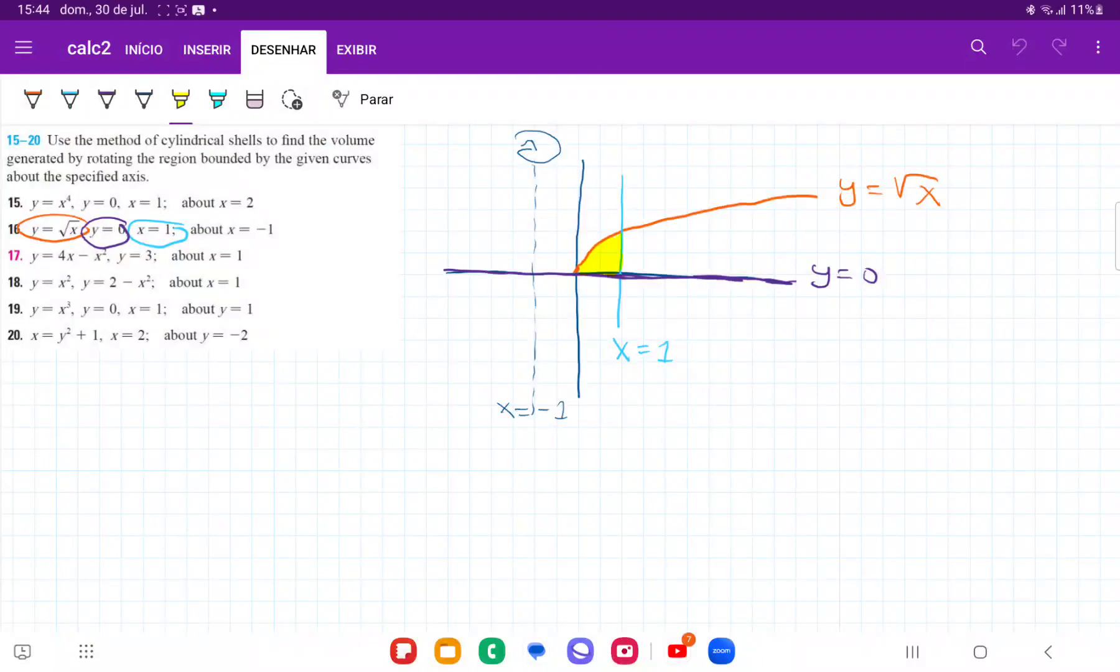From 16, we're taking the area bounded between these curves and rotating about the line x is equal to negative 1.